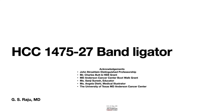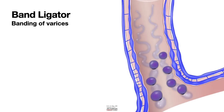Greetings. Let us learn about band ligator. Band ligator is like putting a ligature, and here you can see the application of band ligator to ligate esophageal varices to prevent bleeding as well as treat bleeding. In addition to esophageal variceal bleeding control, band ligator has also been used in the control of arterial bleeding.